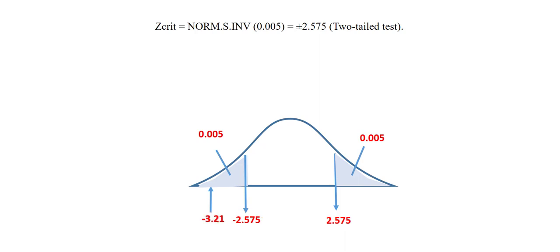After getting the critical value I can go ahead and make my decision. My critical value like we see here is greater than the test statistic. As we can see from here the test statistic falls in the rejection region. So we will be rejecting the null hypothesis.